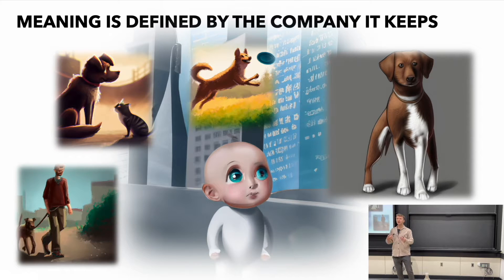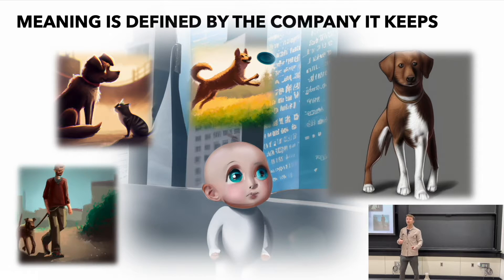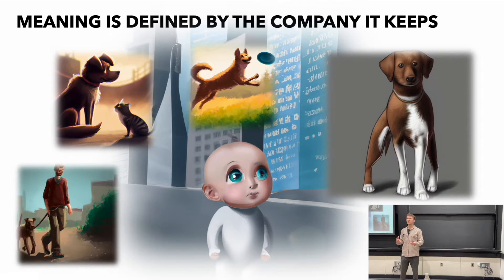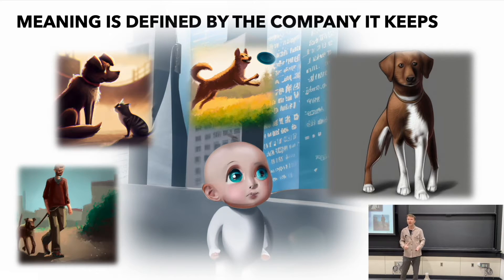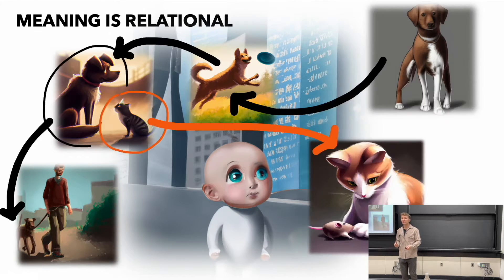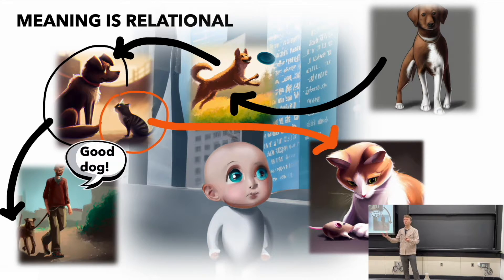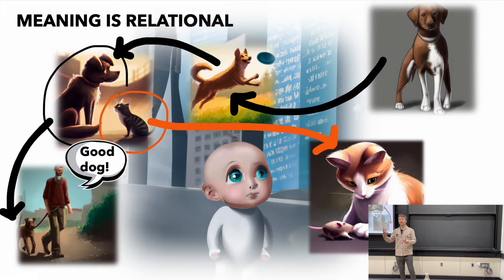You learn what a dog is by saying that a dog is something that's walked by an owner with a leash, something that might have an antagonistic relationship with cats, something that chases frisbees when they're thrown. This is what allows you to understand what a dog is. What you get by this process is a very relational understanding of meaning. And it turns out that even things like language can be picked up in this way, because 'dog' is named or uttered more in contexts where dogs appear. So it's very, very powerful.